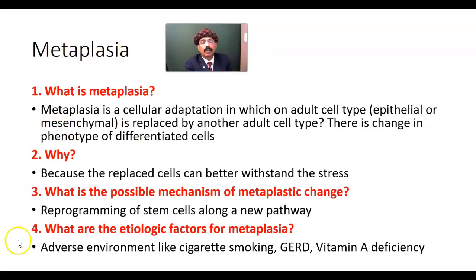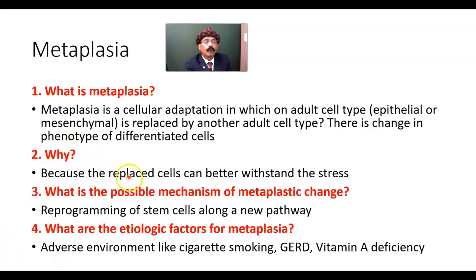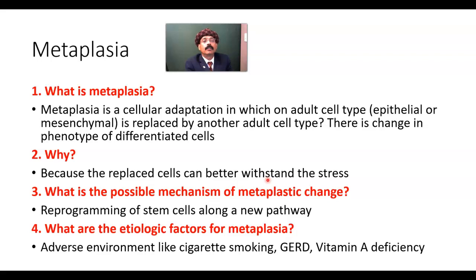So why is there metaplasia? What is the reason for metaplasia? Because the replaced cell can better withstand the stress. Suppose a person is a smoker — the tobacco smoke can be better withstood by the stratified squamous epithelium. Tobacco smoke cannot be tolerated by the normal epithelium, that is the pseudo-stratified ciliated columnar epithelium of the bronchial tree. But the stratified squamous epithelium can tolerate the smoke.